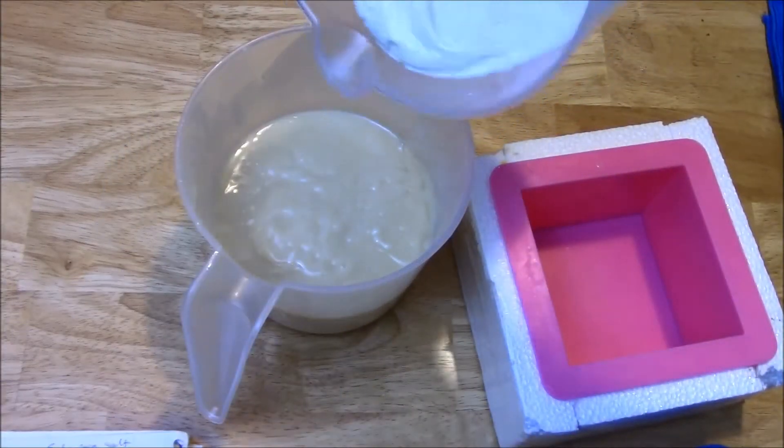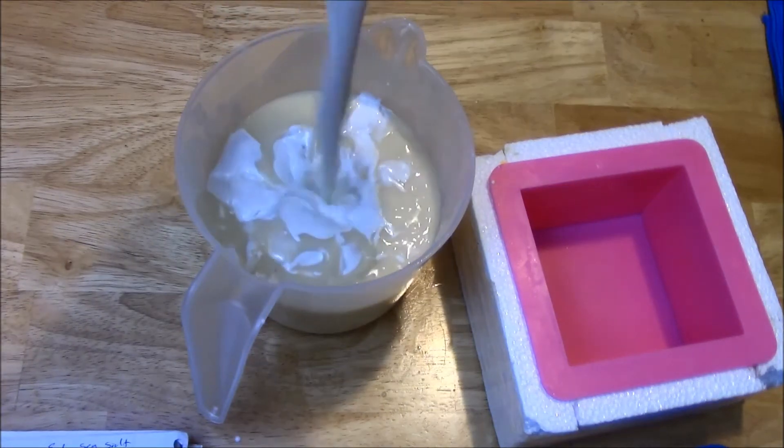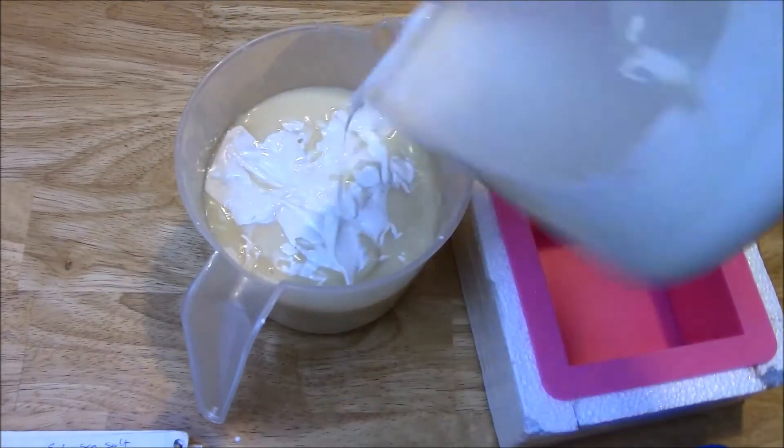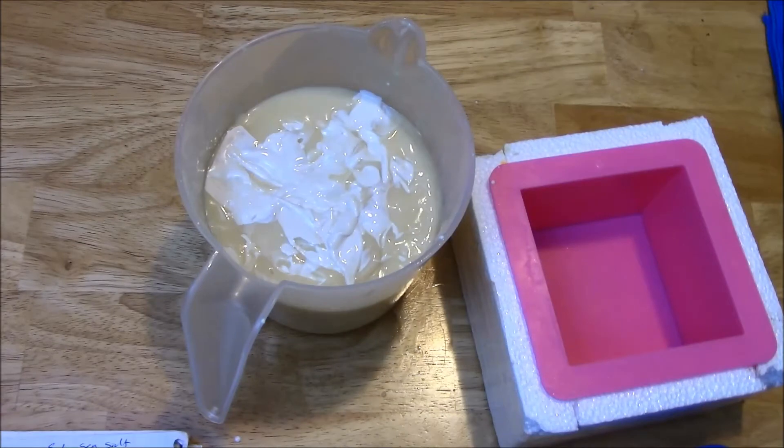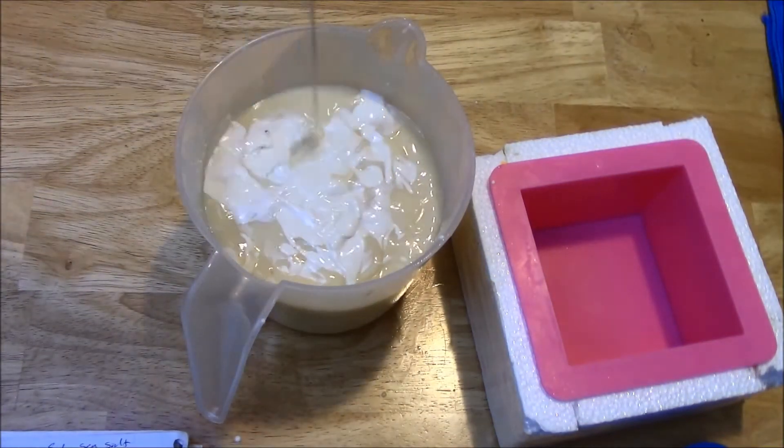So here I'm taking the white and I'm just going to drop it into the uncolored portion. And you can see how thick this is. It happens that quickly. So I have to really work fast. I'm just going to scrape out the rest of the white.